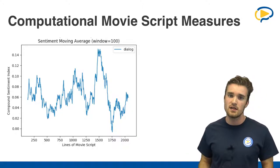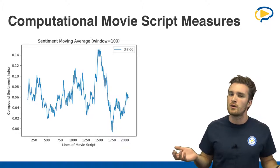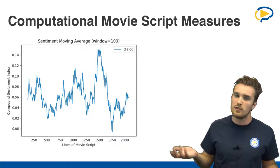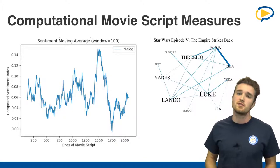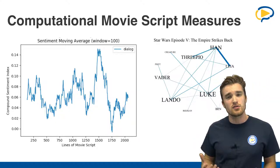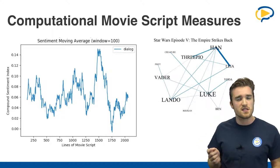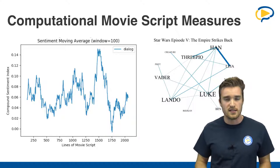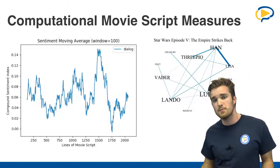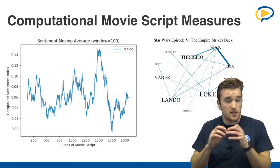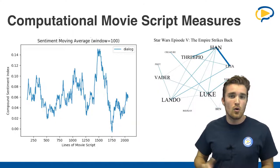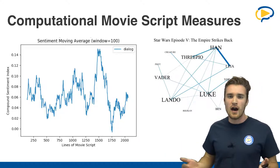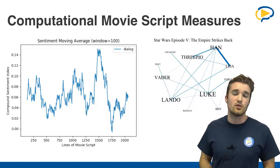For example, we might want to select scenes that are very negative or very positive, which might have interesting moral information. What we can also do, as you can see on the right side here, is construct so-called character networks by looking at which characters co-occur in dialogue and action descriptions, and thereby build a character network that tells us which is the most central character in the script, and which are interesting correlations or associations between characters — for example, who converses most often. In this case, you can see for Star Wars Episode V that Han and Leia are the primary characters that converse most often.